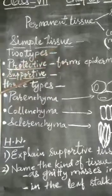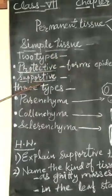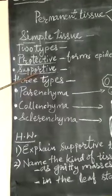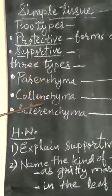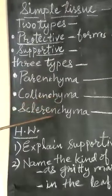The second one is supportive tissue. It is of three types: parenchyma, collenchyma and sclerenchyma.